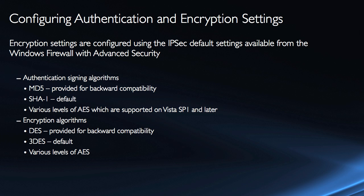Encryption settings are also configured via the IPSec default settings, available from Windows Firewall with Advanced Security. Typically you don't need to modify these, but we want to be careful to do so consistently, because this is an easy way to get into problems with security associations. For authentication signing algorithms, you have MD5, which is provided for backward compatibility, and the default is SHA, the Secure Hashing Algorithm. Various levels of AES are also supported on Vista Service Pack 1 and later. For encryption algorithms, you have DES and Triple DES — Triple DES is the default — as well as various levels of AES, Advanced Encryption Standard. This is a bit different from the old IPSec policies, where these settings lived on the policy itself; now they are a default setting and won't be found on the actual connection security rules.